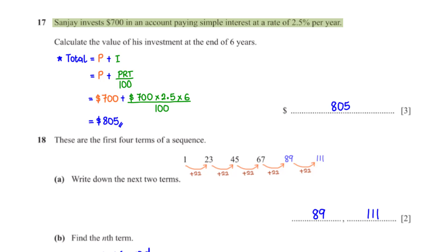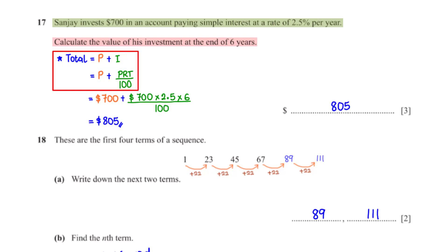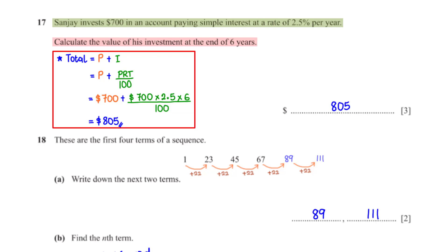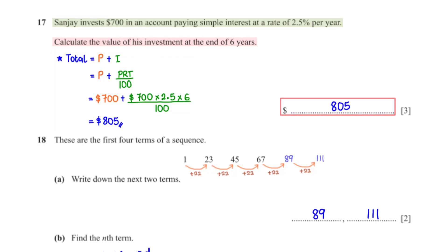Sanjay invests $700 in an account paying simple interest at 2.5% per year. Calculate the value of his investment at the end of six years. We add the principal P to the total interest I, where I = PRT/100. With P = 700, R = 2.5%, and T = 6 years, the total investment value is $805.